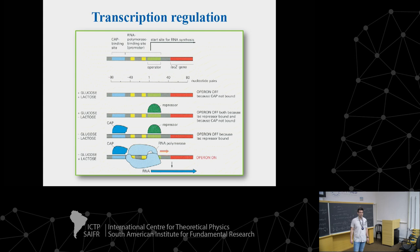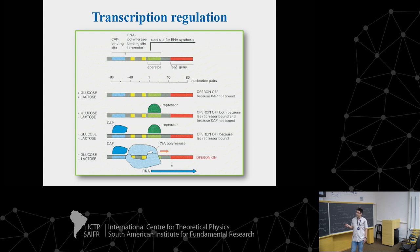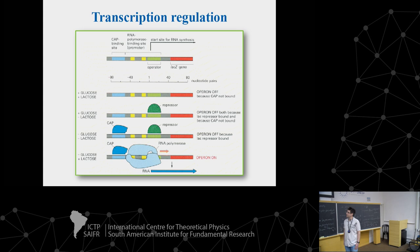There is also an activator transcription factor shown in blue. When glucose is absent — meaning the bacterium is hungry — this activator binds and recruits RNA polymerase to the promoter. In summary, transcription occurs only when glucose is absent and lactose is present: RNA polymerase binds, transcription starts, and the lactose-degrading enzyme is synthesized. This is a nice example of control at the level of transcription.